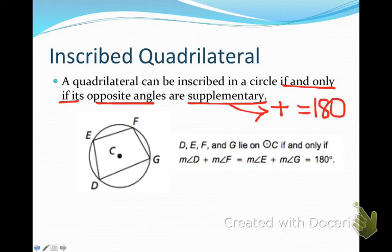So opposite angles. So in this diagram, opposite angles would be E and G, D and F. And when I add D and F, it would have to equal 180. When I add E and G, it would have to equal 180.